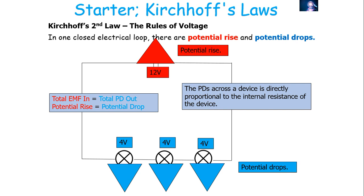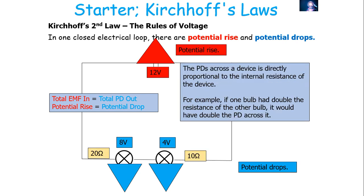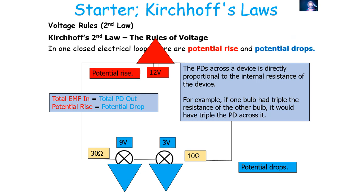In this example on the screen, the bulb on the left-hand side has double the resistance of the bulb on the right-hand side, so it will take double the potential difference, but the two values added up must equal the EMF of the power source. In this second example, the bulb on the left has three times as much resistance as the bulb on the right, so it will take three times as much potential difference, but the two numbers added together must equal the EMF provided by the cell, which is 12 volts.